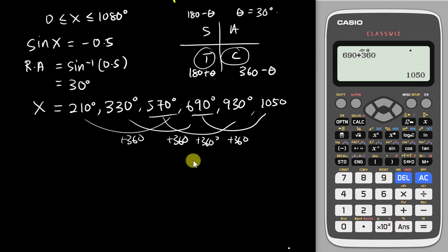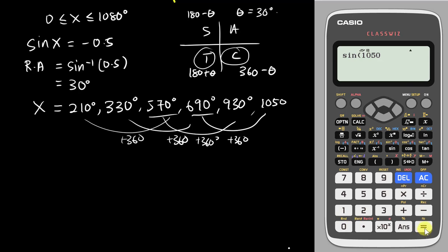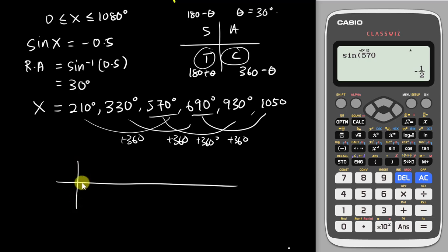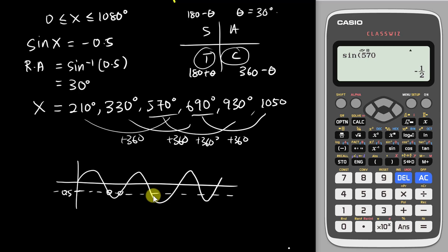To double-check, you can verify all these angles give negative 0.5: try sine 1050, sine 930, sine 690, and sine 570 — all return negative 0.5. This is how the sine graph looks when it crosses the line at negative 0.5, giving all those intersection angles as your answers.